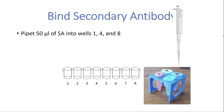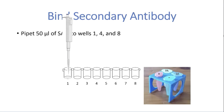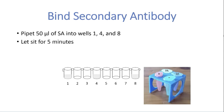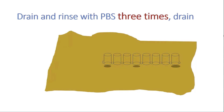Now the secondary antibody is added. 50 µL of secondary antibody is pipetted into wells number 1, 4, and 8 and allowed to sit for 5 minutes. The ELISA strip is drained again and rinsed 3 times with phosphate buffered saline to ensure that as much of the unbound secondary antibody is removed from the wells. The strip is drained again on a dry piece of paper towel.